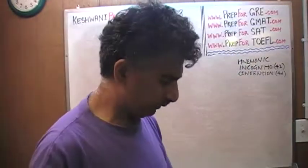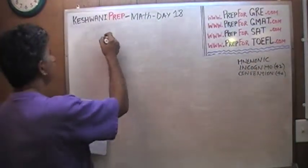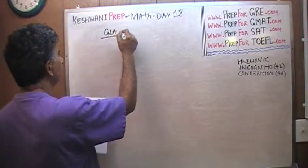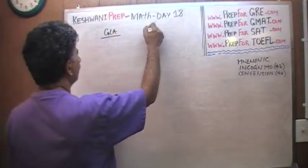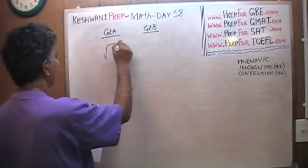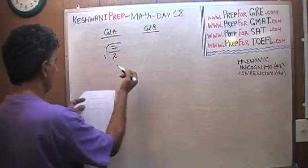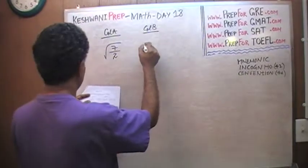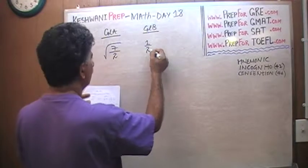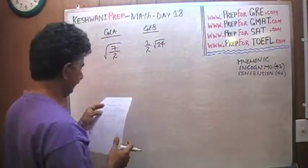Let's take a look at the problem we have today. We are given two quantities: Column A — the square root of 7 over 2 — versus Column B — one half of the square root of 14.